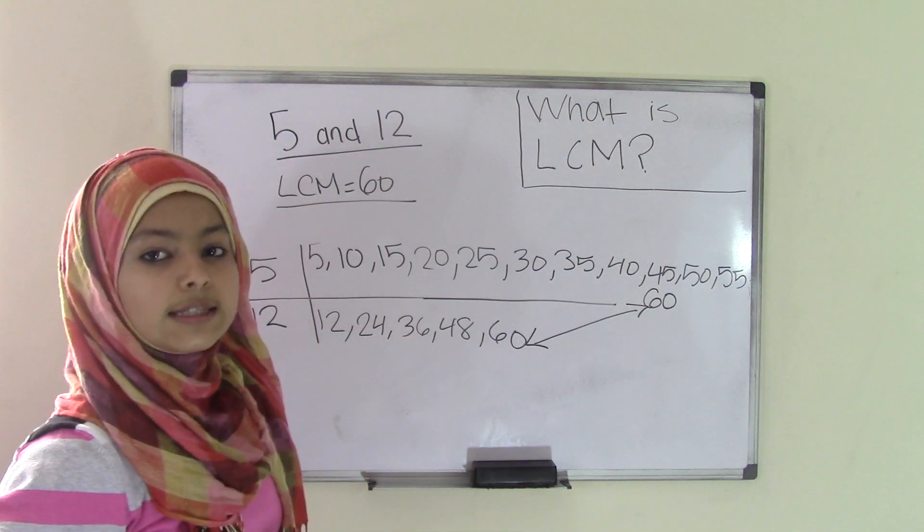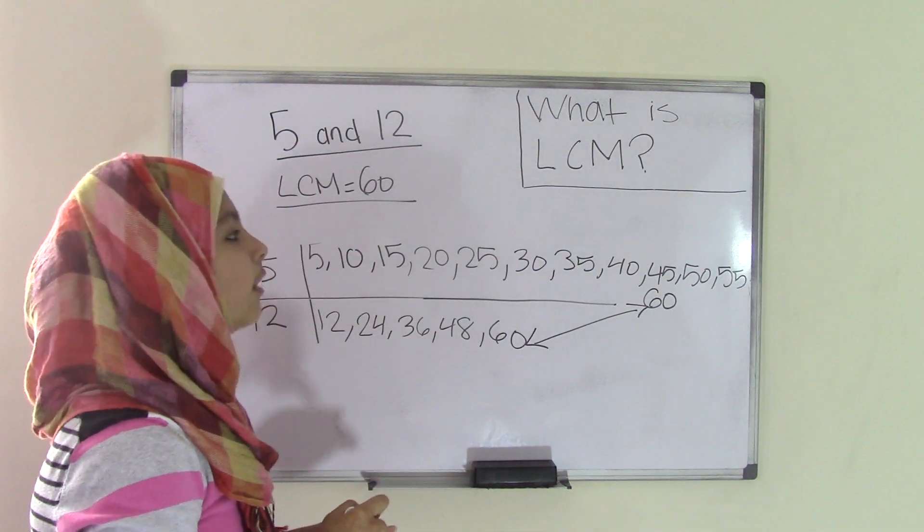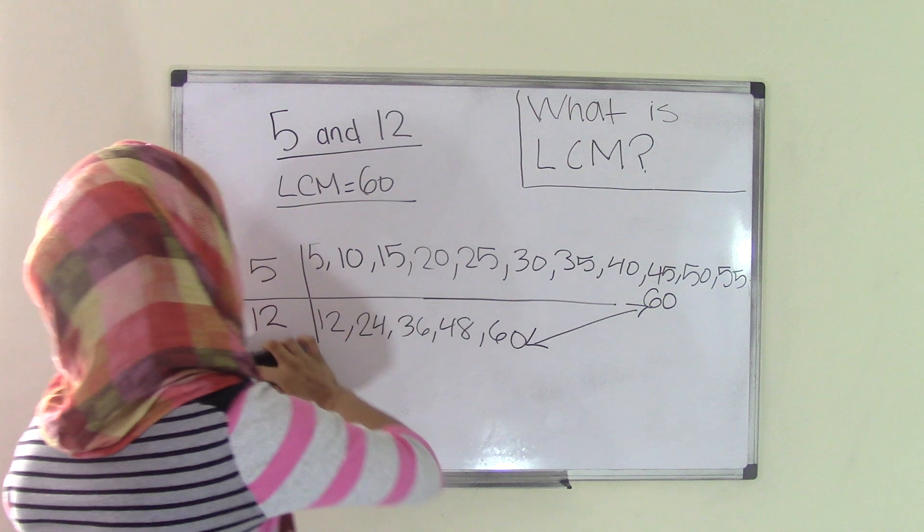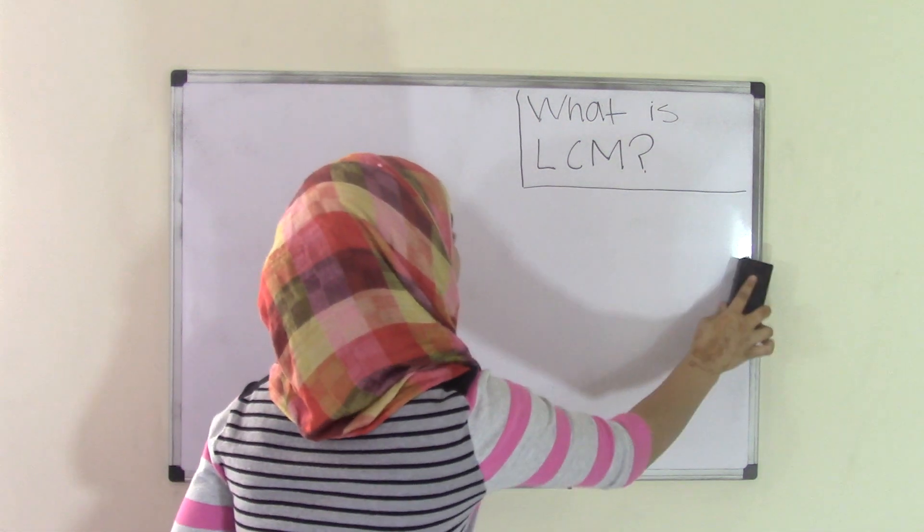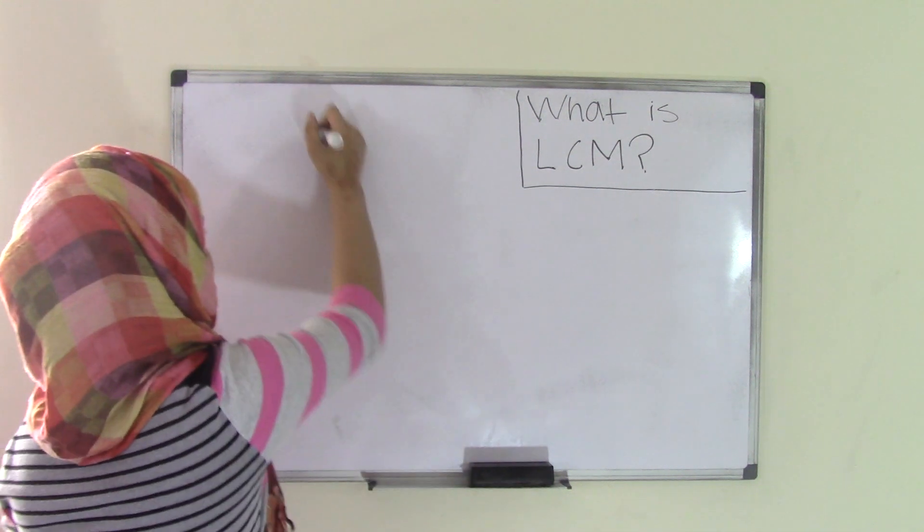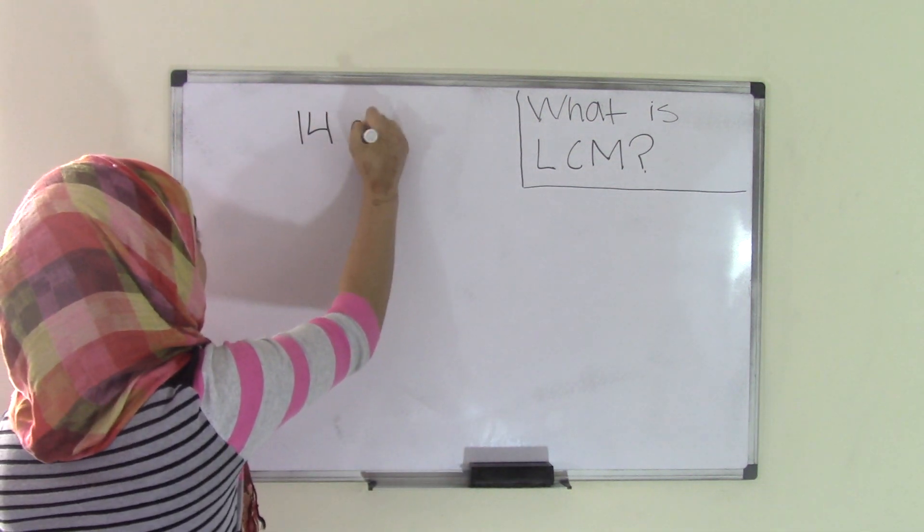Now that we've tried one example, let's try another example with larger numbers. So 5 and 12 are pretty small numbers, right? Now what if we have numbers such as 14 and 28?